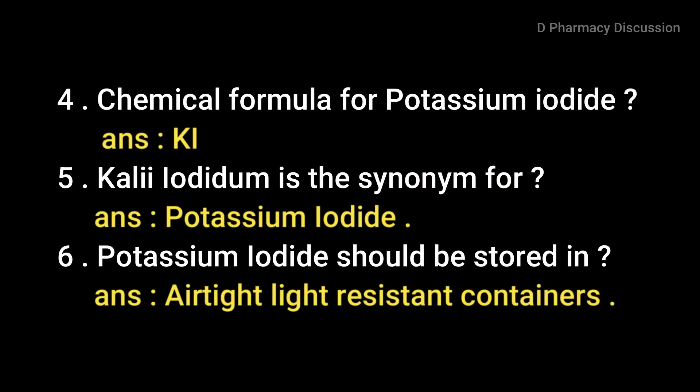Question four: the chemical formula for potassium iodide is KI. Fifth question: 'Cali iodidum' is the synonym for potassium iodide. Next question: potassium iodide should be stored in airtight, light-resistant containers because on long exposure to air it becomes yellow due to the liberation of iodine, and a small quantity of iodate may be formed. Therefore, it must be stored in airtight containers protected from light and moisture.